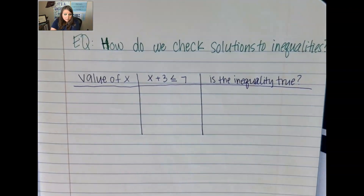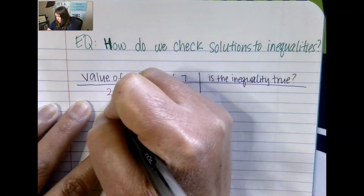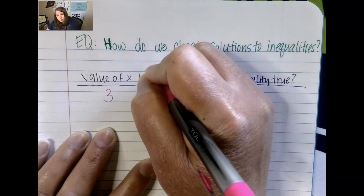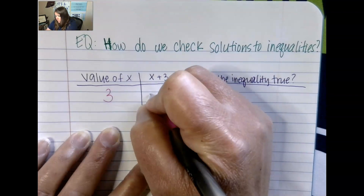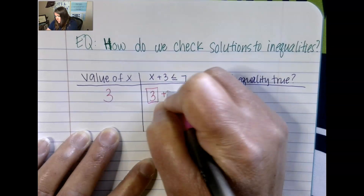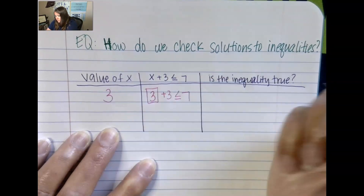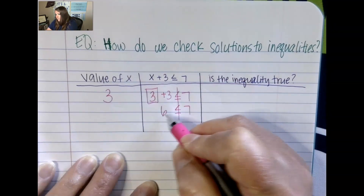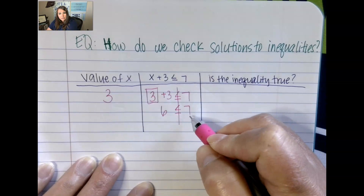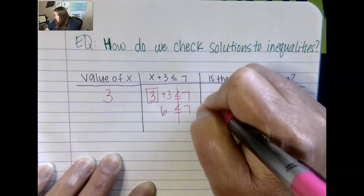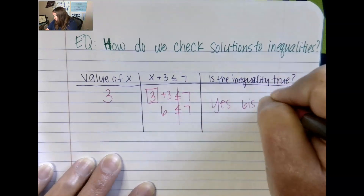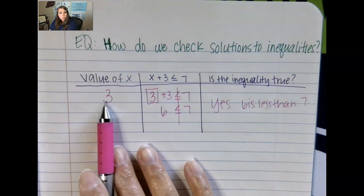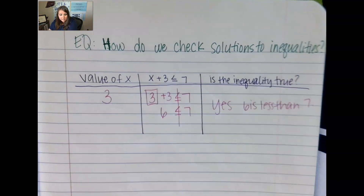First, let's look at a value of 3. Is 3 going to make this statement true? I'm going to put 3 in for x, so it says 3 plus 3 is less than or equal to 7. 3 plus 3 is 6. Is 6 less than or equal to 7? Yes — 6 is less than 7, so this inequality is true when we use a value of 3.